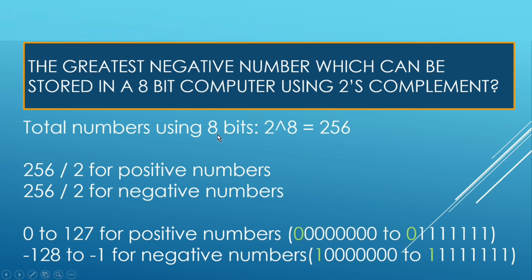So from 8 bits, we can create 256 numbers. Now as per 2's complement method, half of these 256 numbers are used for positive numbers, and half of the numbers are used for representation of negative numbers.